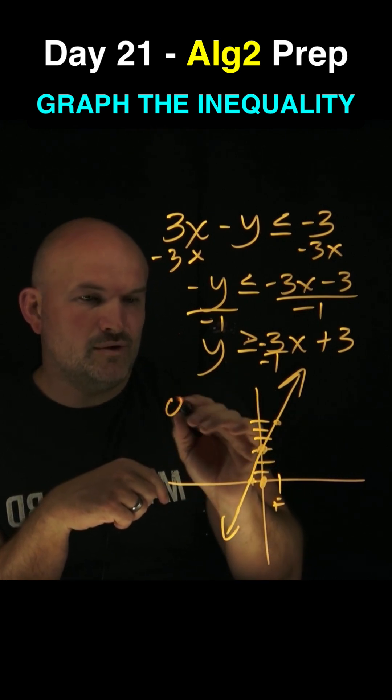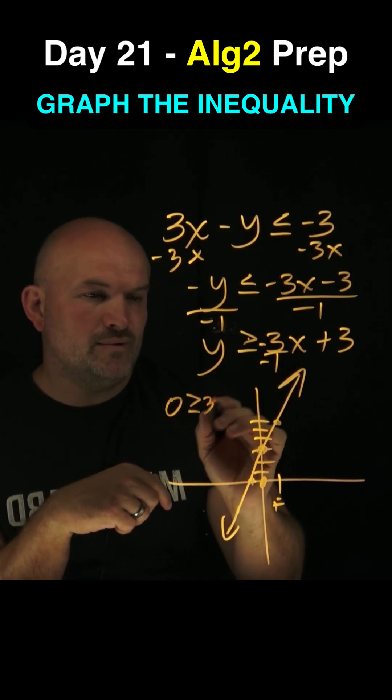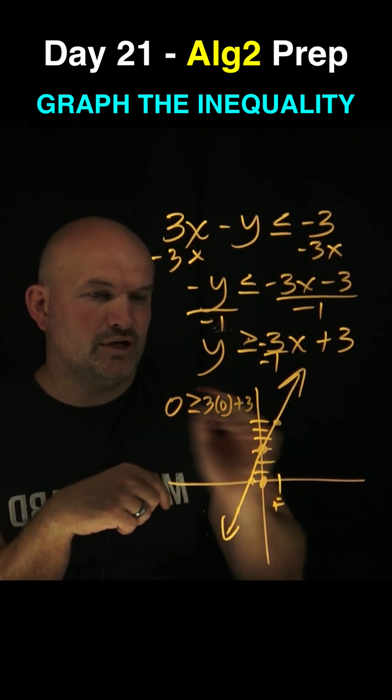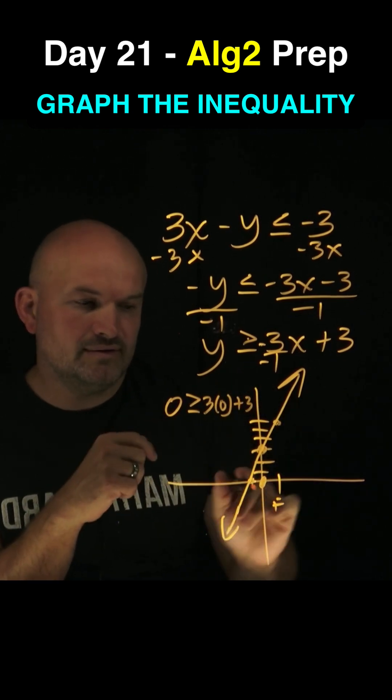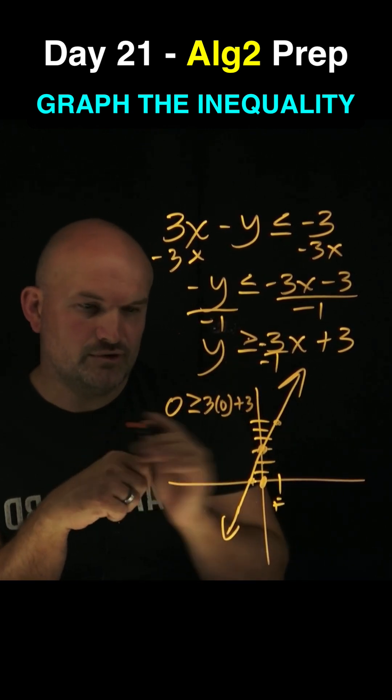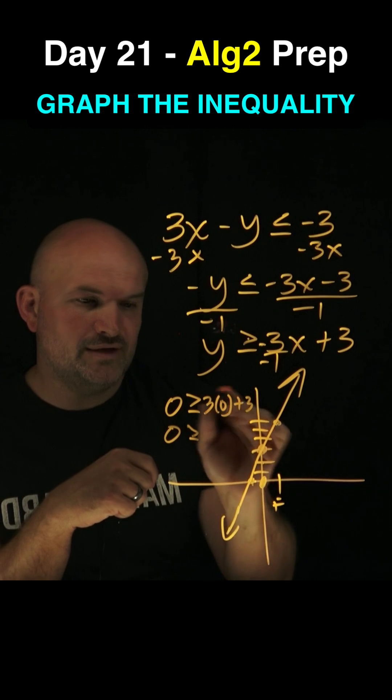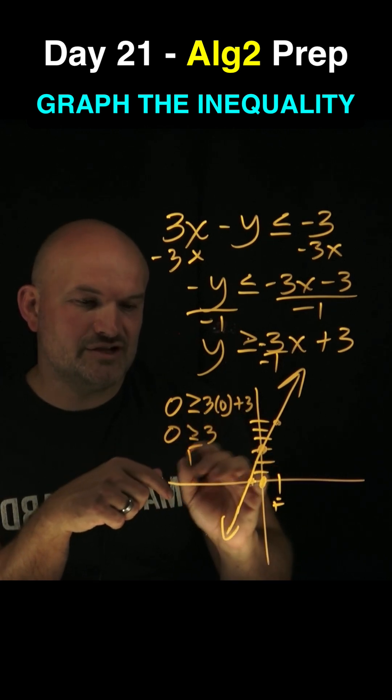So simply just plug in a 0 in for the y and a 0 in for the x. If that makes the inequality true, then we know that that point is true and all other points are going to be true. So 0 is greater or equal to 3. That, ladies and gentlemen, is false.